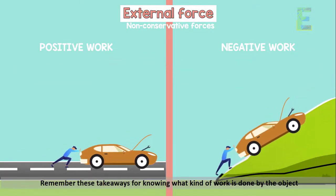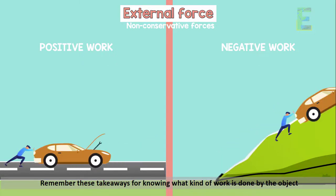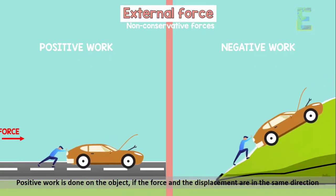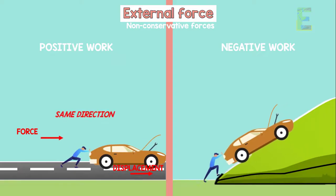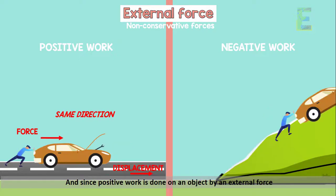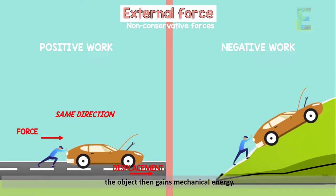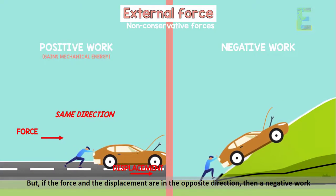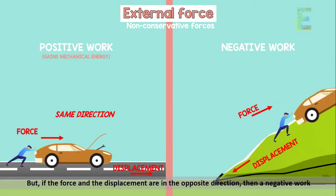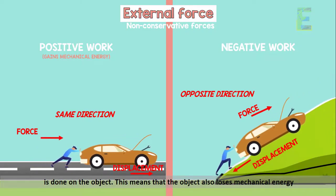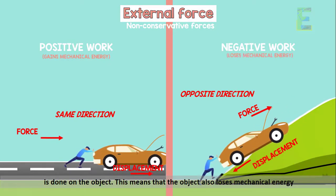Remember these takeaways for knowing what kind of work is done by the object. Positive work is done on the object if the force and the displacement are in the same direction. And since positive work is done on an object by an external force, the object then gains mechanical energy. But if the force and the displacement are in the opposite direction, then a negative work is done on the object. This means that the object also loses mechanical energy.